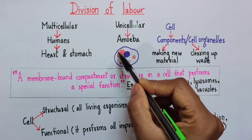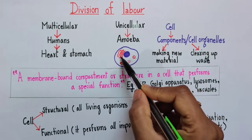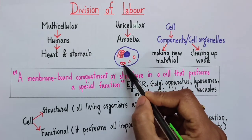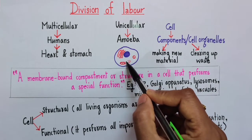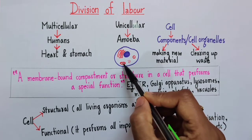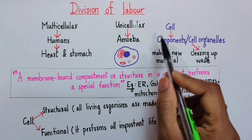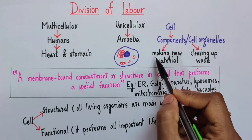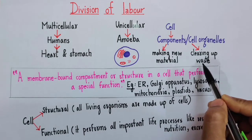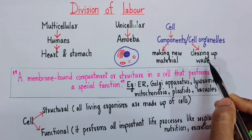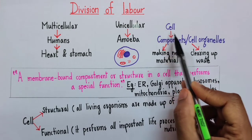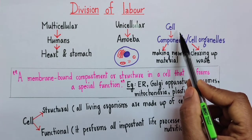Now if you consider this diagram, I have drawn certain structures in red color. These structures are what we call as cell organelles, and each of these cell organelles has a definite role to play in our cell. Some of them may be involved in making new material for the cell, some may be involved in clearing of the waste.